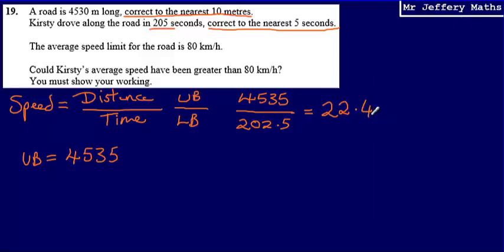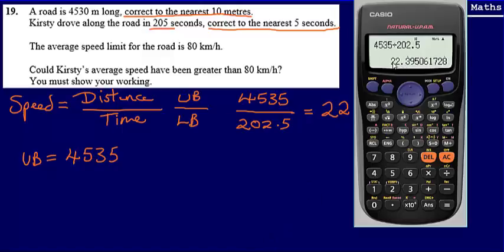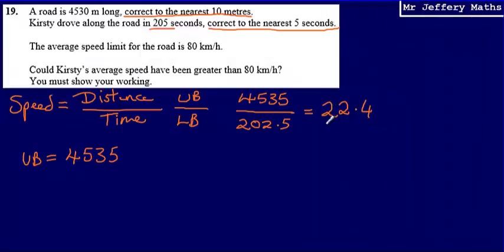That gives us an answer of about 22.4. Now be careful here, I'm not going to use 22.4 in my further calculations because there's going to be a few more things that I need to do. I'm going to leave everything in my calculator, but because we're asked to show our working, I'm just going to write down 22.4 here for now, rounding it to three significant figures. But actually the calculations I'm going to be doing, I'm going to be using the number that's in my calculator, which is 22.395061728.